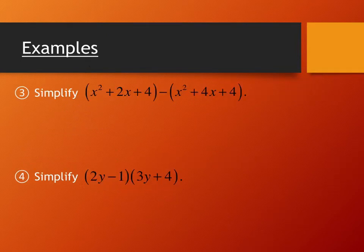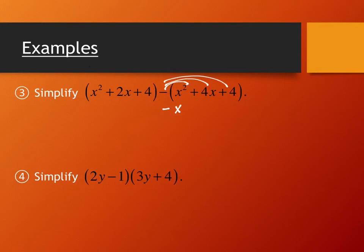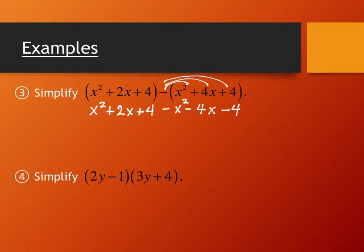With subtraction, there's a little front-end work. You're likely to make mistakes if you don't distribute the negative first. I strongly encourage rewriting the second polynomial by distributing the negative through all its signs. On this one, all the signs happen to be positive, so the negative changes them all: we get negative x squared, negative four x, and negative four.